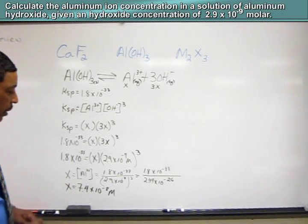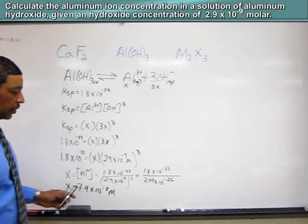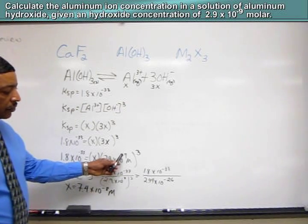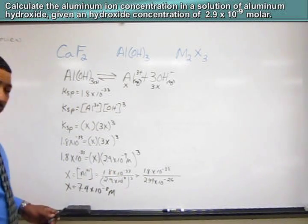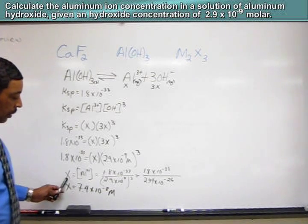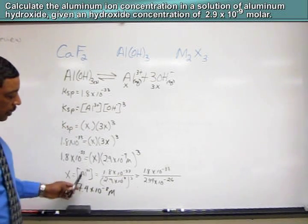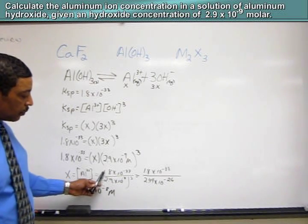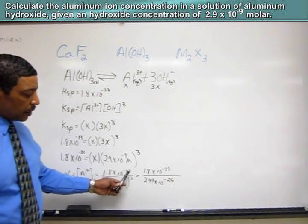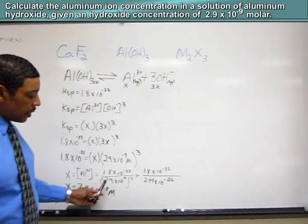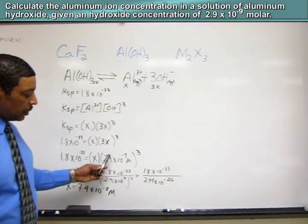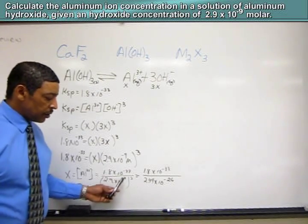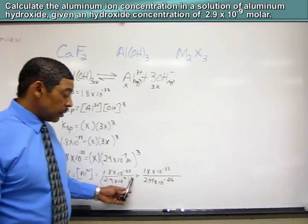Now we can solve for x. To solve for x, simply divide through by 2.9 times 10 to the minus 9 molar cubed, which will generate the following. x, which is equal to the concentration of the aluminum ion, is equal to the KSP value, which is 1.8 times 10 to the negative 33, divided by the cube of the given concentration of hydroxide, which is 2.9 times 10 to the minus 9 cubed.